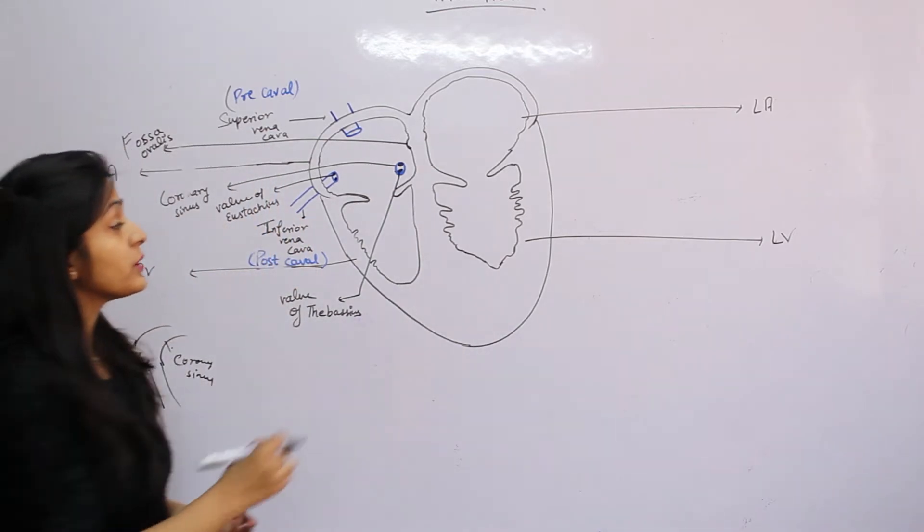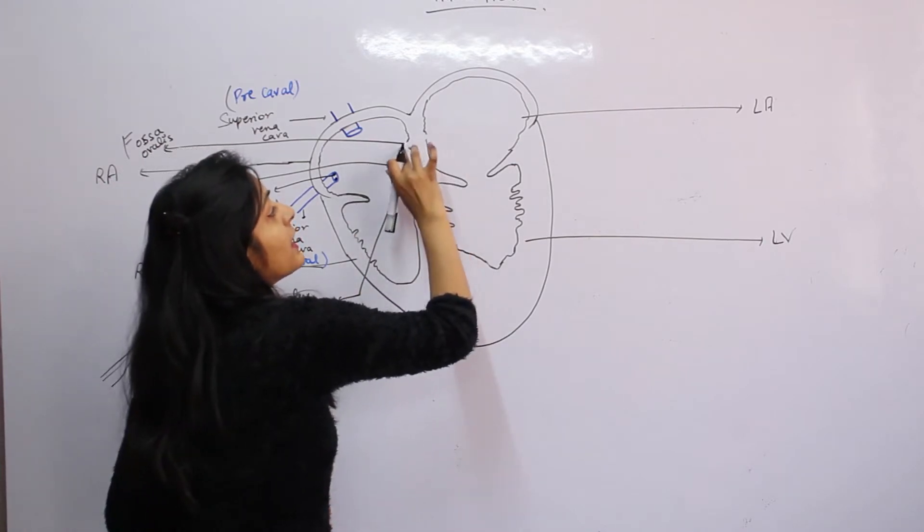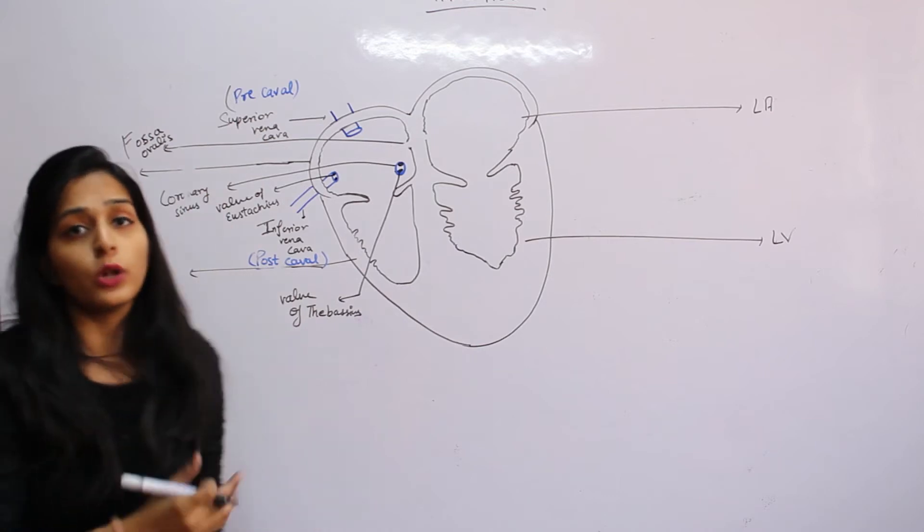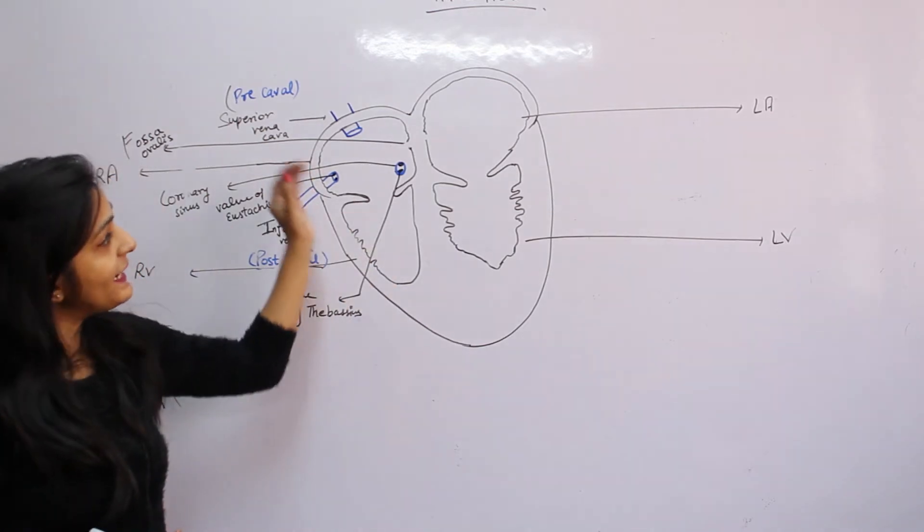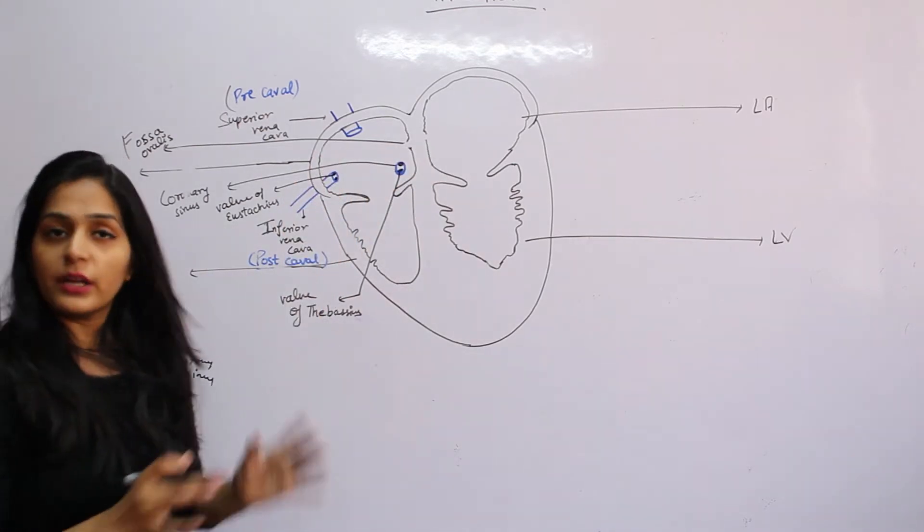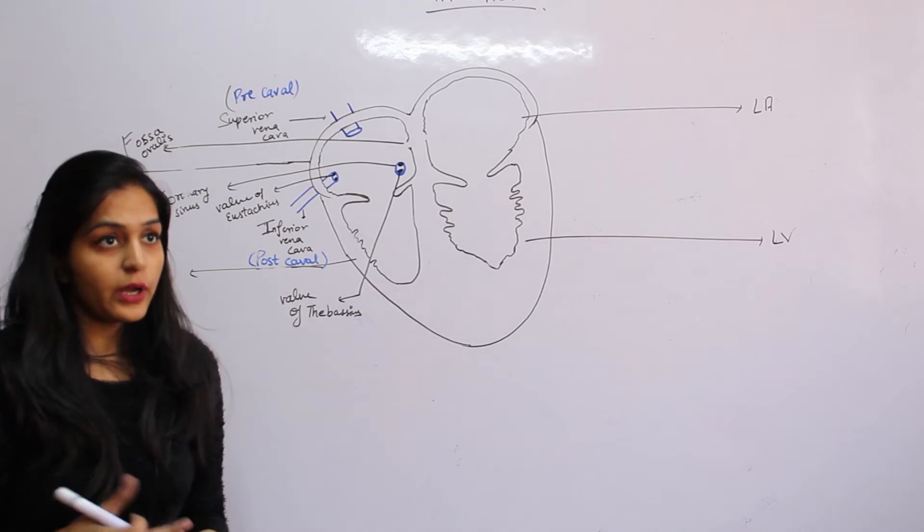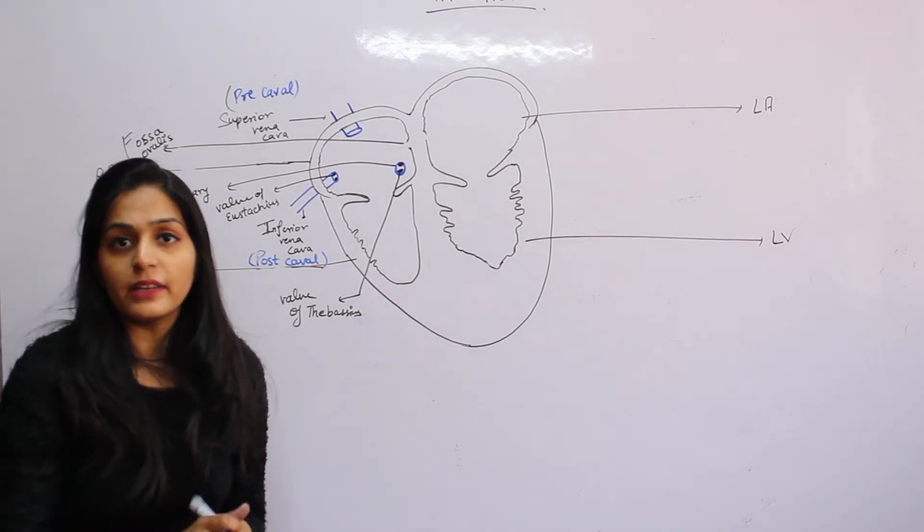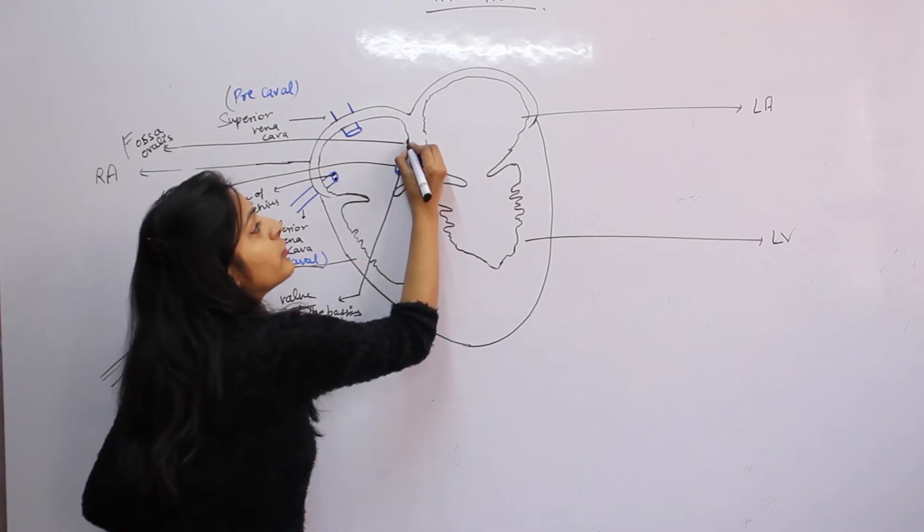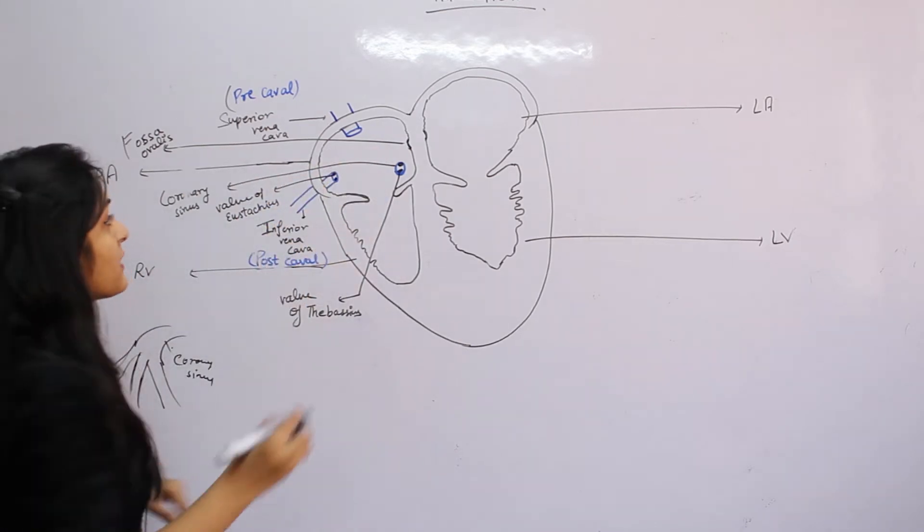In the embryonic stage, these two chambers have the Fossa Ovalis open, so mixed blood goes directly to this chamber and then to the body. But after birth, three months or one month before, a depression is created, and this is what we call Fossa Ovalis.